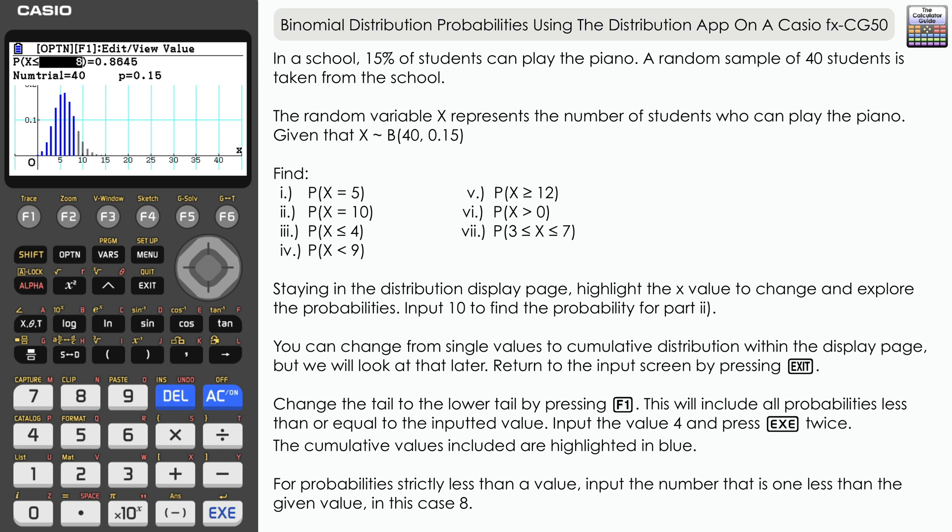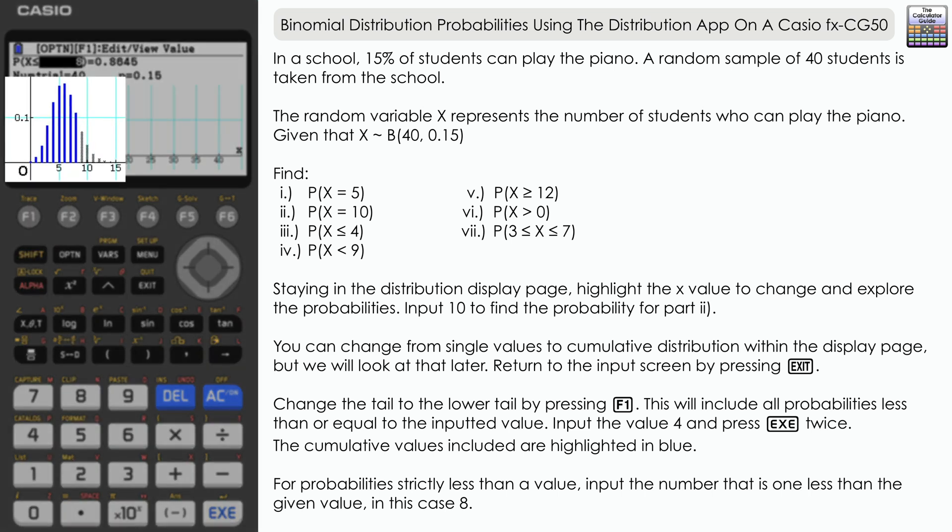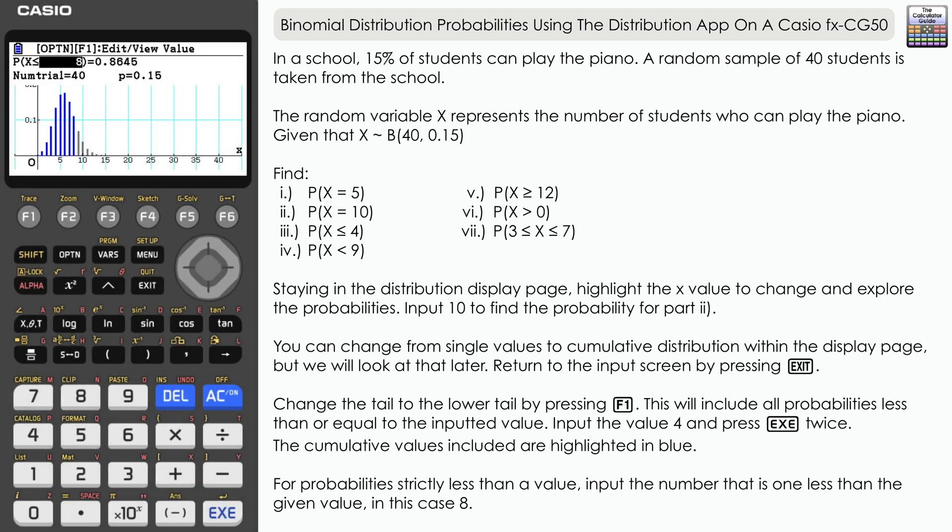And as the binomial is a discrete distribution, if we want, say, less than 9, that means we need to input the number below that, which is 8, and that will include values that are less than and equal to 8. And we can see that displayed here on the graph there, so we haven't actually got the value of 9 included. Probability there, 0.8645.